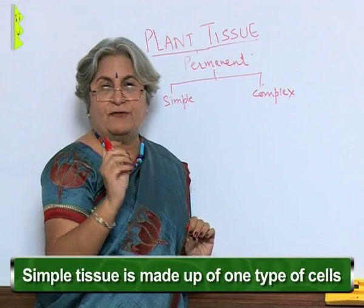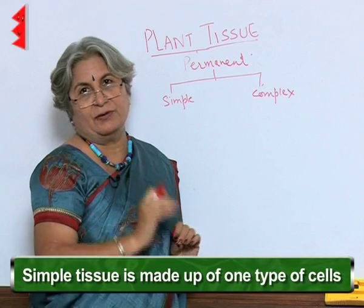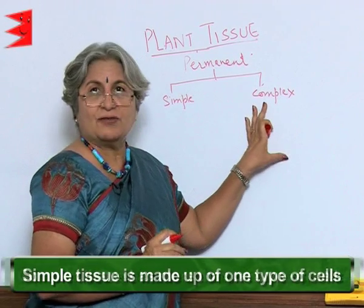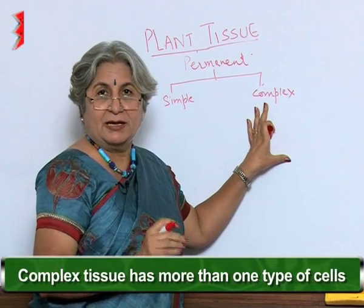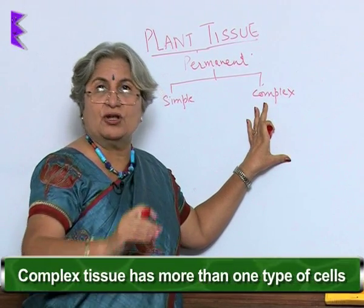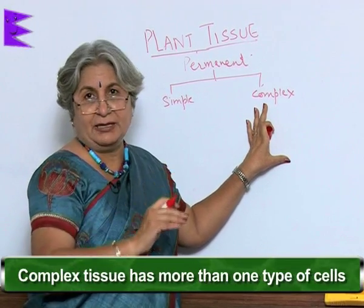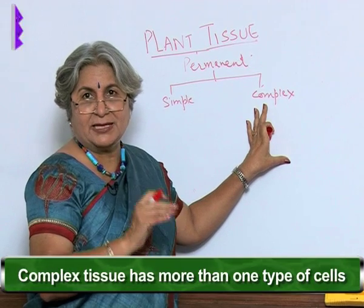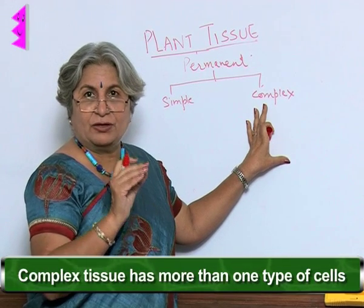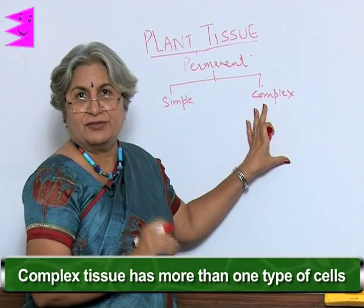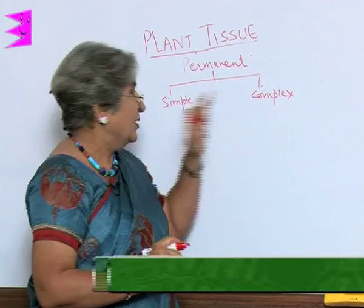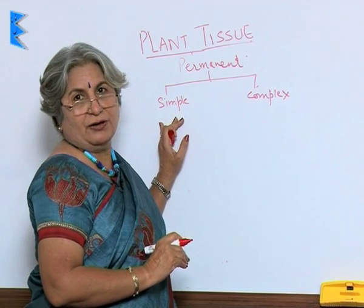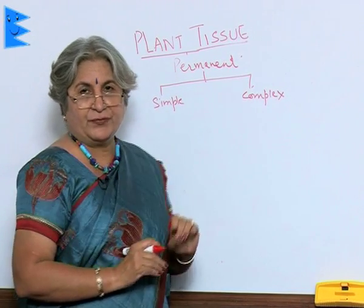Simple tissue is made up of only one type of cells, but in the case of complex tissue there can be variation, which means there will be more than one type of cells. Now first we will focus only on the simple tissue.